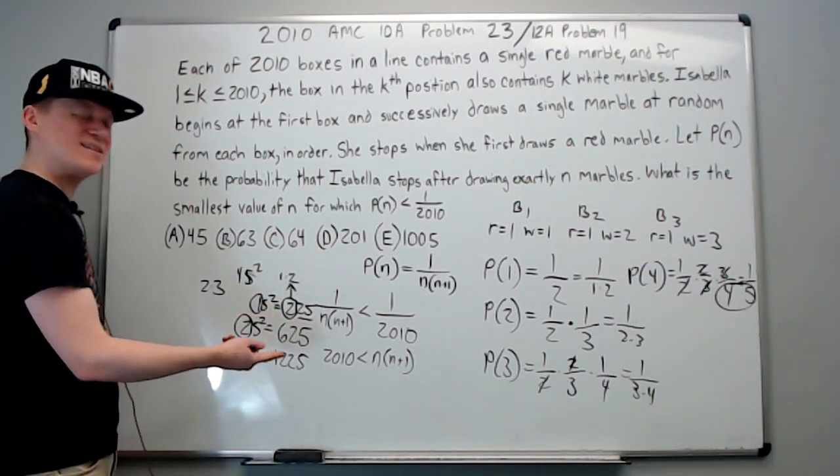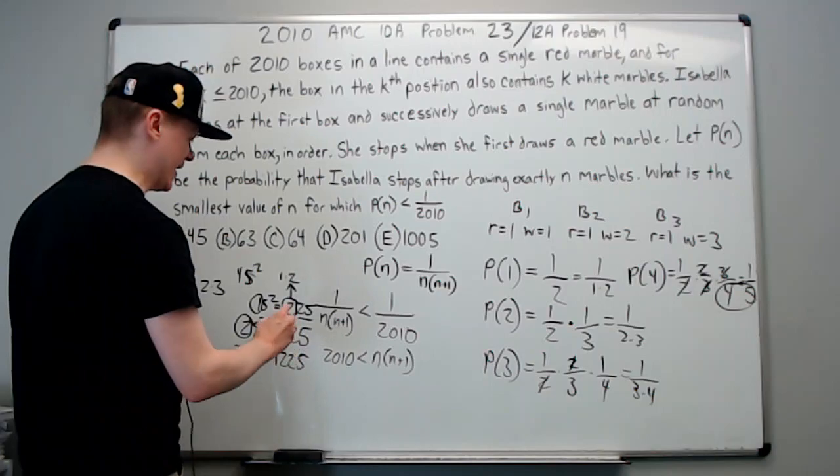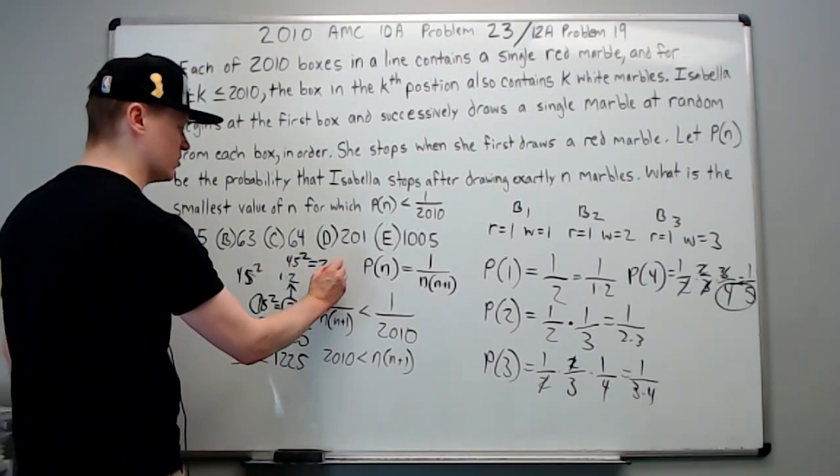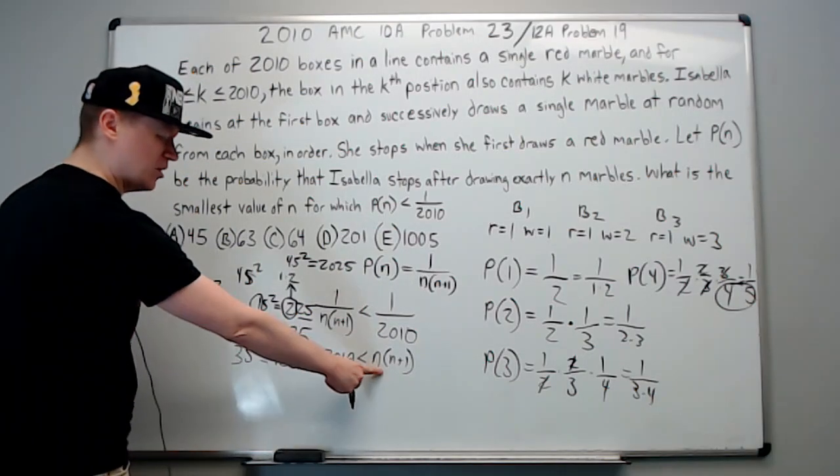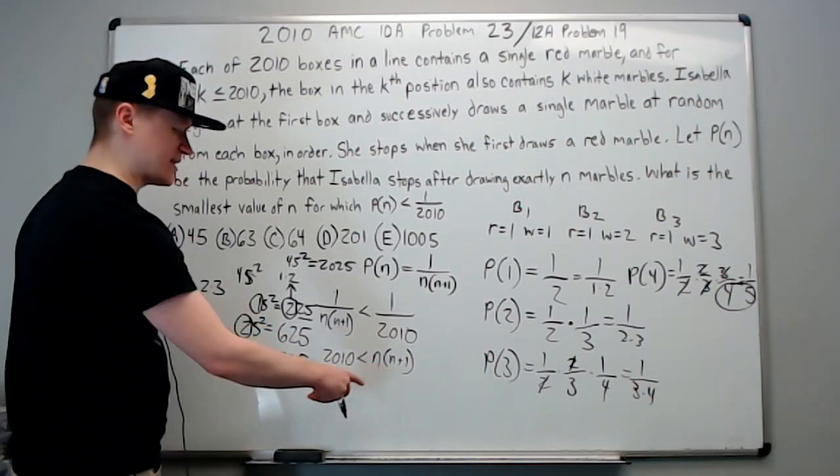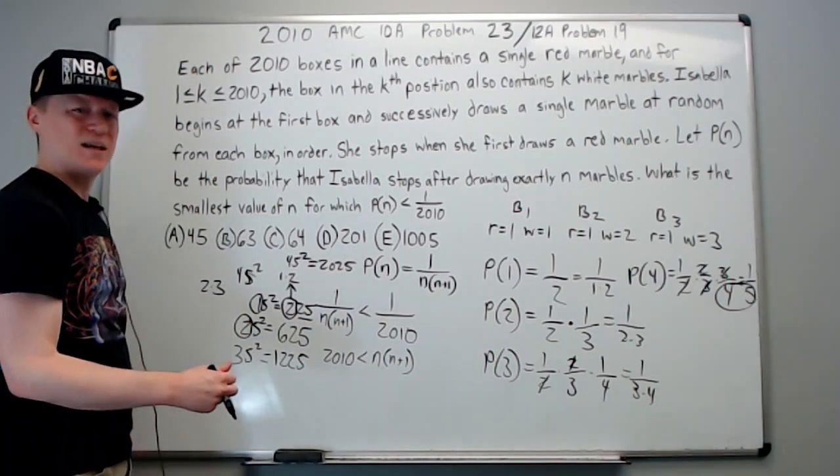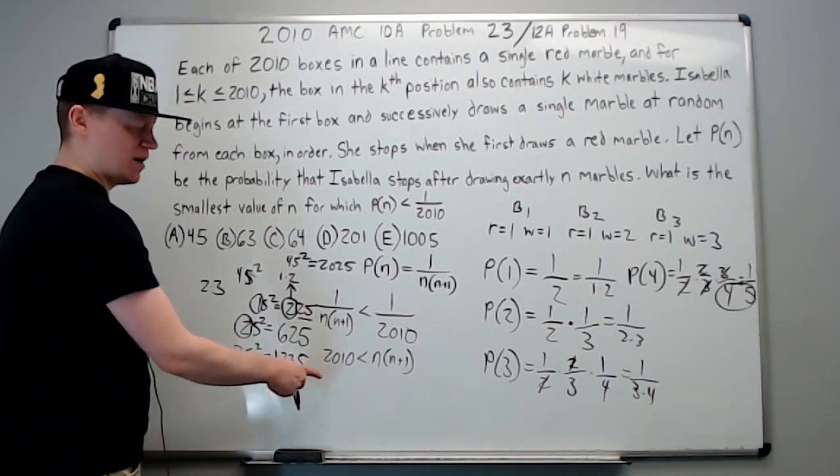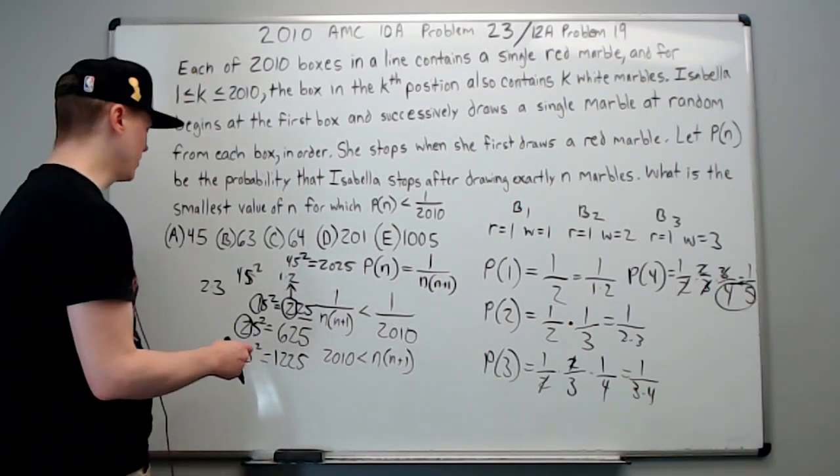So if you apply that here, 4 times 5 is 20, throw 25 on the end, and you can see that 45 squared equals 2025. Well, that's already bigger than 2010, so clearly if I do 45 times 46 it'll be even bigger. What about 44 times 45? It's actually going to be smaller than 2010 and not work. But even if it was, this is the smallest possible answer, and since it already is bigger than 2010, it is the answer.